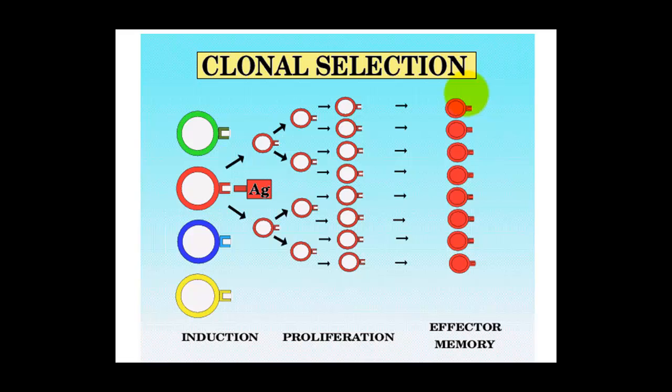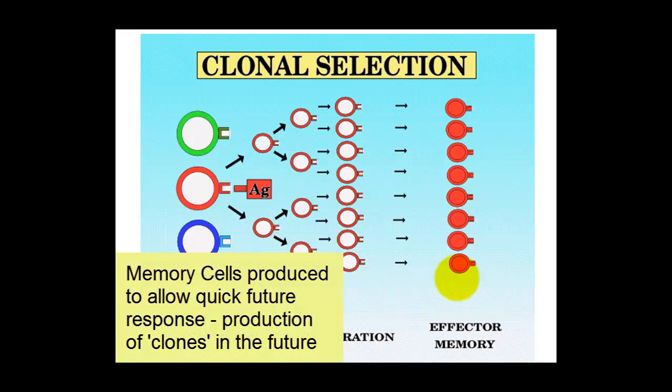What happens after that is we also produce some memory cells, and they stay in the system to allow that response to happen even quicker in the future. So rather than starting with one cell, you've got numerous memory cells around the body to stop a repeat infection.